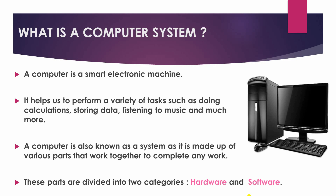What is a computer system? A computer is a smart electronic machine. It helps us to perform a variety of tasks such as doing calculations, storing data, listening to music and much more. Children, you must have seen this — this is a computer.